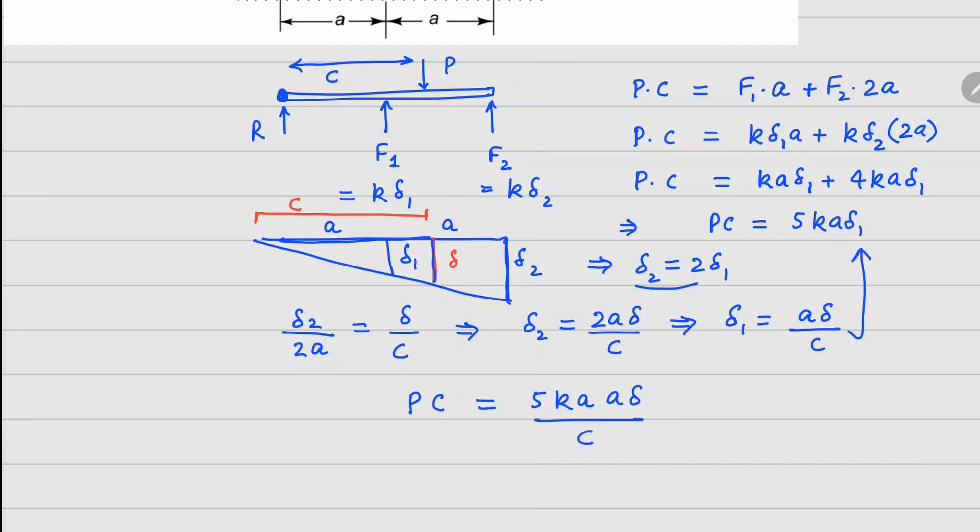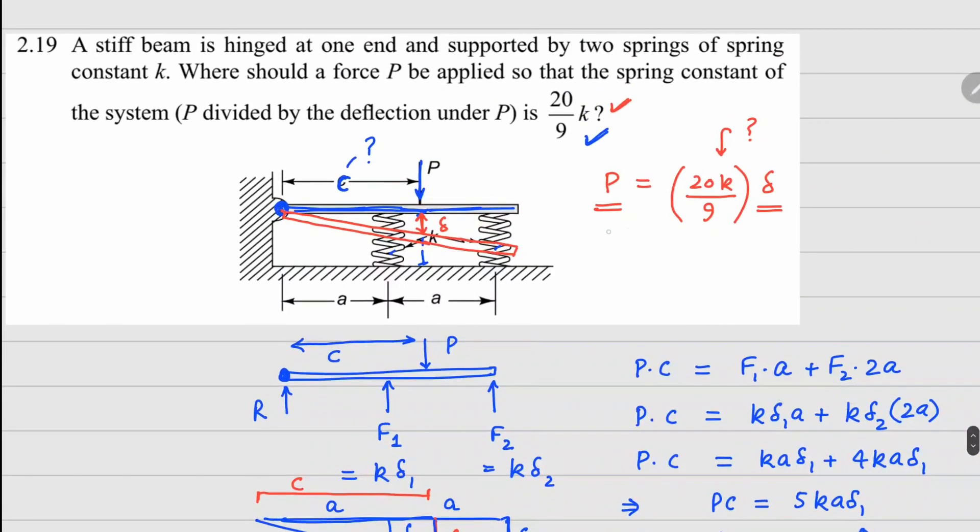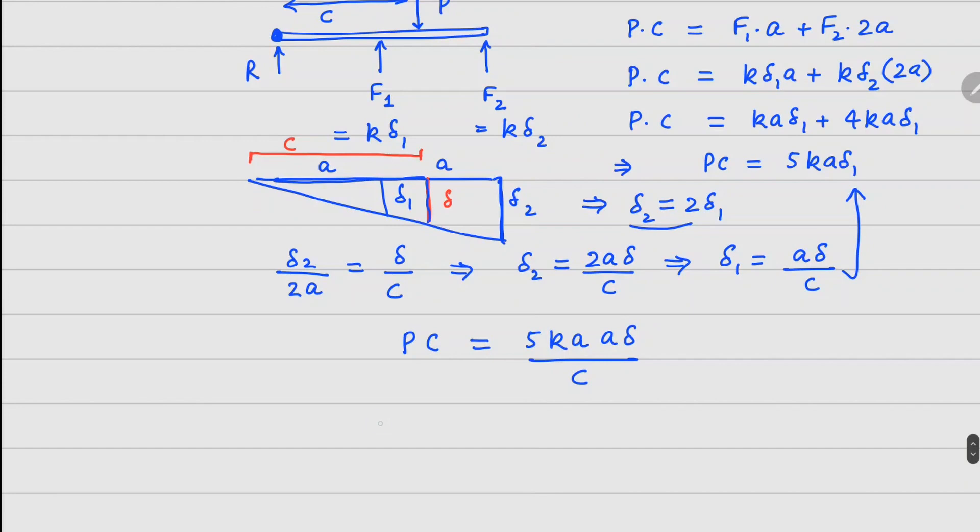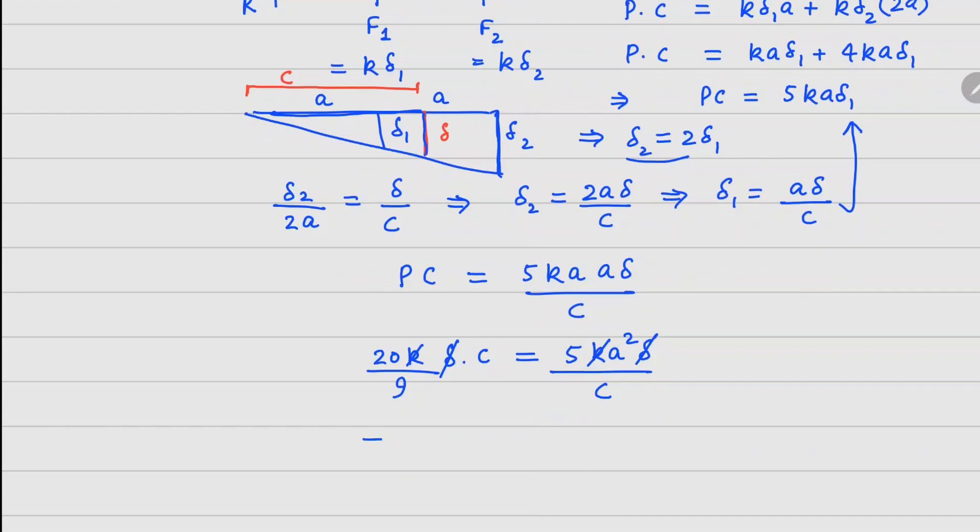In the problem, the relationship between P and delta is already given, so P equals 20k by 9 delta. We can substitute this here: 20k by 9 delta times c equals 5ka squared delta divided by c. Delta and delta cancel out, k and k cancel out. This gives us c squared over a squared equals 9 over 4, and if we take the square root from both sides, the c value is 3 by 2 a.